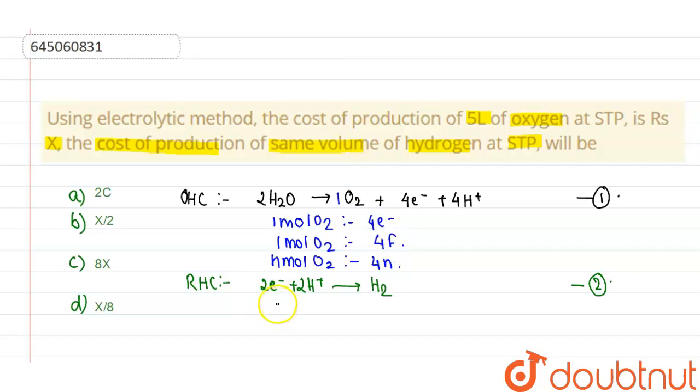Now for the production of 1 mole of hydrogen, 2 electrons is needed or we can say for the production of 1 mole of hydrogen, 2 Faraday's of electricity is needed. So for N moles of hydrogen, 2N Faraday's of electricity will be needed.